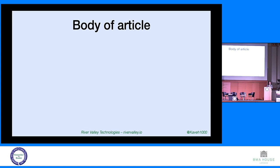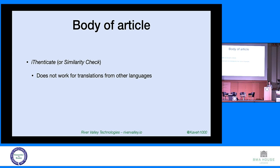Obviously, look at authors' background and discipline. If a biologist, psychiatrist, and architect are writing a paper together, that doesn't sound right. This is all metadata — we're looking around the data. Then there's the actual article itself. We can use similarity checks like iThenticate to see if it's been plagiarized. One problem is there's not enough data for articles translated from other languages — for example, there's a lot of Russian-language text that won't be picked up. If you take a Russian paper and have it translated, iThenticate won't pick it up.